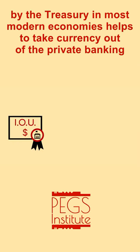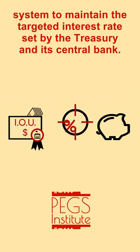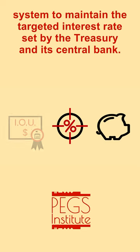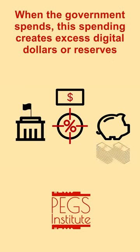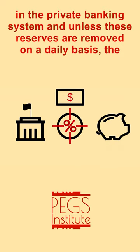Bond issuance by the treasury in most modern economies helps to take currency out of the private banking system to maintain the targeted interest rate set by the treasury and its central bank. When the government spends, this spending creates excess digital dollars or reserves in the private banking system, and unless these reserves are removed on a daily basis,